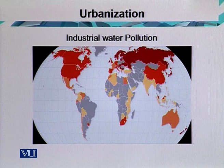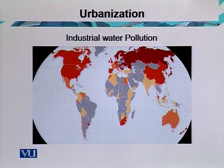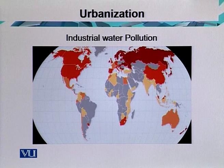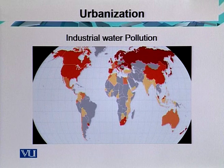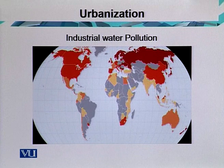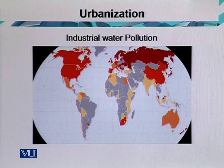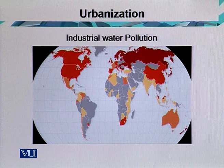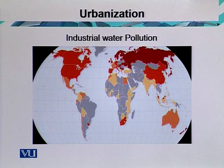Although municipal wastewater treatment is increasing in most developed countries, 90% of the raw sewage from urban areas in the developing world is discharged totally untreated into streams and oceans, contaminating surface water supplies, endangering drinking water sources, and destroying aquatic life. About 70% of the total surface water in India is polluted. Industrial water pollution is putting maximum pollution into the surface environment, contaminating rivers and making water unusable and undrinkable.